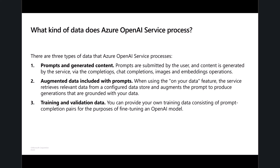To summarize, the three types of data we're focusing on are: first, prompts — what the user is inputting and any content generated from those prompts, including images and responses; second, augmenting data — the 'on your data' feature in Azure OpenAI where data is inserted into the process; and third, training and validation data — the training data set used for fine-tuning. Those are the three types of data we'll focus on today.